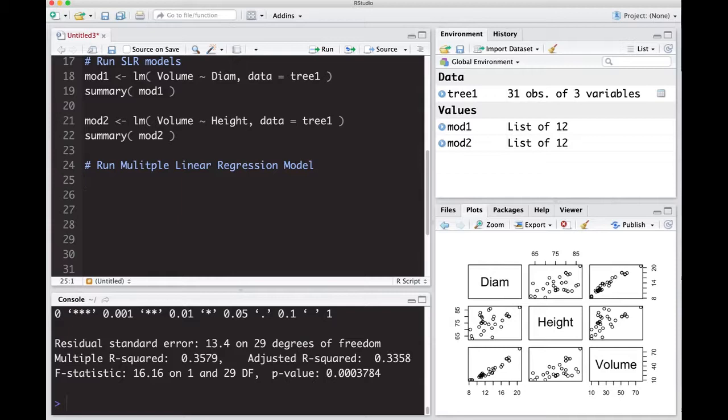This is different than multivariate linear regression. Just keep that in mind. Multiple linear regression means we have multiple predictors and one response. Multivariate regression means we have multiple responses. We're going to use the lm function again. lm, still going to use volume just like before, tilde, and I'm going to use diameter and then all I need to do is put a plus sign and then height.